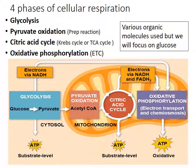Cellular respiration can be broken down into four big phases: glycolysis, pyruvate oxidation (also called the prep reaction), the citric acid cycle (also called the Krebs cycle or TCA cycle), and oxidative phosphorylation (also called the electron transport chain and chemiosmosis). In the next lecture video, we'll talk about these phases in more detail, tracking a glucose molecule through each phase. Looking at glucose simplifies keeping track of the overall process.